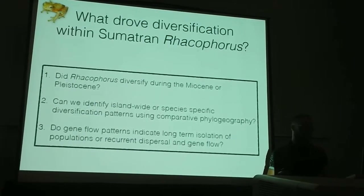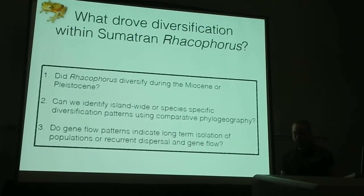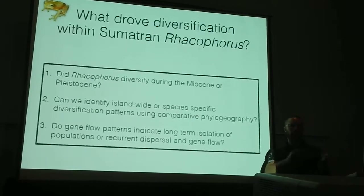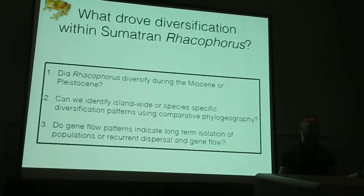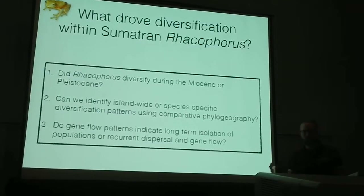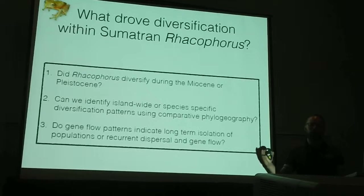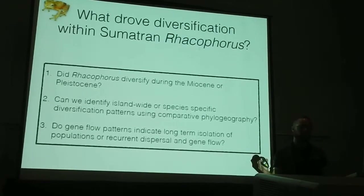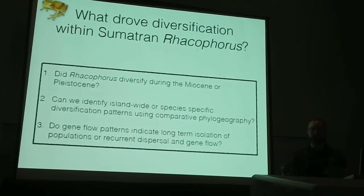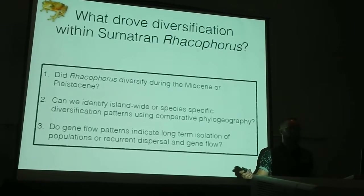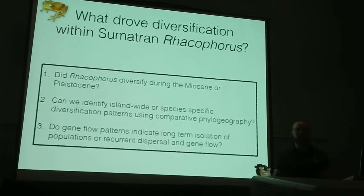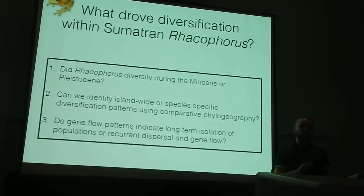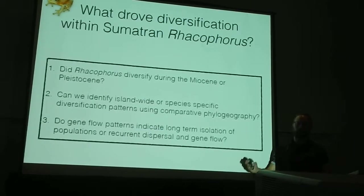I've asked three specific questions using these three focal taxa to understand diversification on Sumatra. First is a time question: when did Racophorus diversify? If we can understand a temporal framework, we'll know what processes were occurring in the Miocene, Pliocene, and Pleistocene. Second, taking a comparative approach among those three species, do we see concurrent patterns indicating island-wide processes drove diversification, or discordant patterns indicating that life history traits drove diversification in each species? And finally, do gene flow patterns across the island indicate lots of dispersal during the Pleistocene and contemporary gene flow, or do we see long-standing isolation indicating that once things were isolated on mountain tops, they weren't able to disperse later?